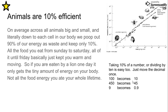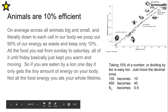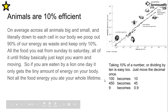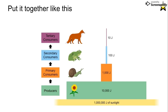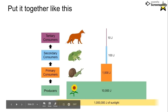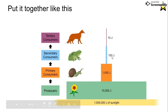To get 10% of the energy you divide by 10: 100 becomes 10, 450 becomes 45, 9 becomes 0.9. So if given some solar energy, knock off two zeros to get what's left in the plants, then knock off one zero every level after that. The producers get a million joules of sunlight; chop off two zeros and you produce 10,000 joules of plant. Chop off one zero: 1,000 joules of snails. Chop off another: 100 joules of frog. That leaves only 10 joules of fox.